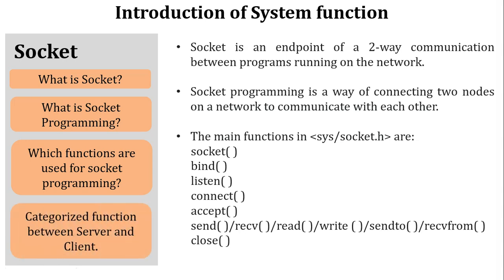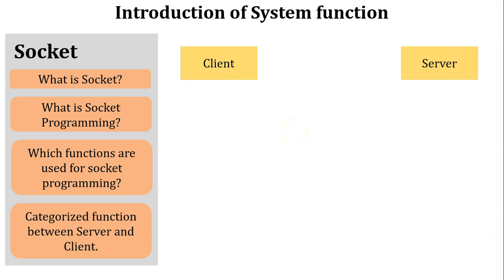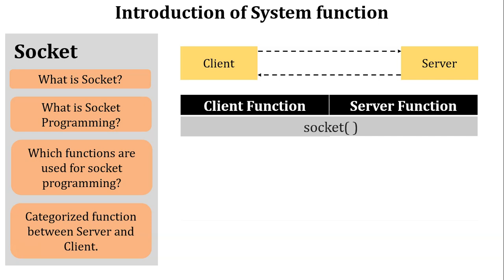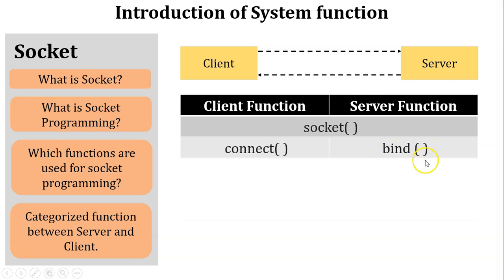Now let's categorize the functions between server and client. We all know that socket programming is used in the client-server architecture. The first function is socket, which is used by both the client and the server to create a socket. The next function is connect, which is used by the client to connect with the server. The next function is bind, which is used by the server to bind the IP address as well as a specific port with a specific service.